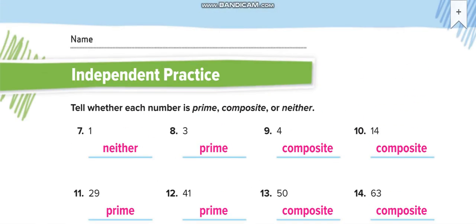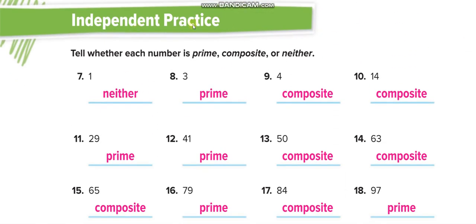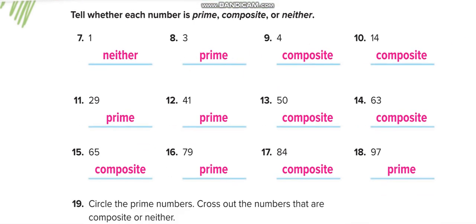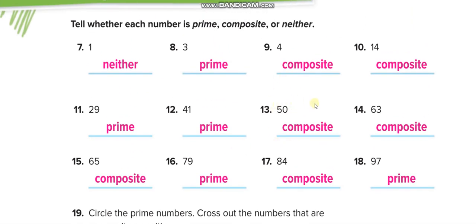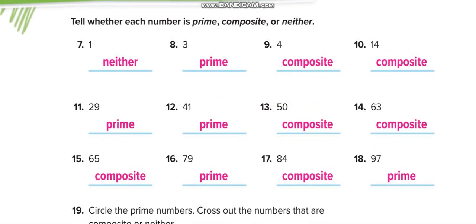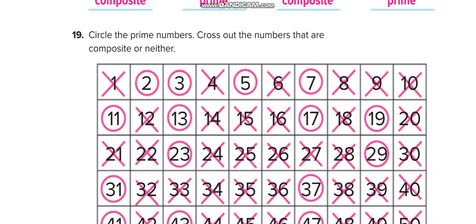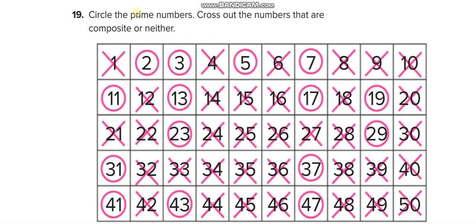Let's move to the next page — independent practice. You have to solve this by yourself and then match your answers from this video. Easy numbers; you just have to write whether the number is prime or composite. You can pause the video and write your answers, then match them. From this table, you need to circle the prime numbers and cross out the numbers that are composite or neither.